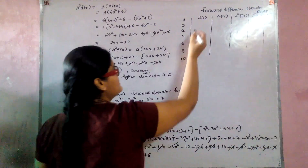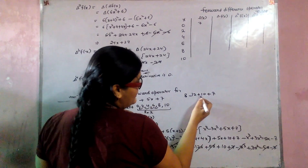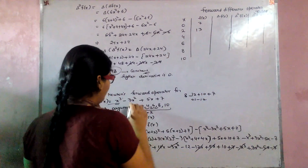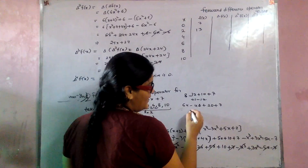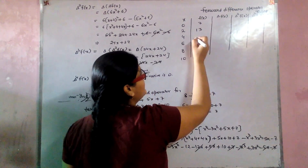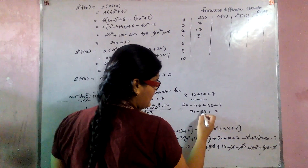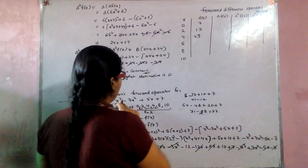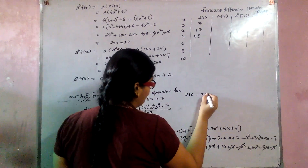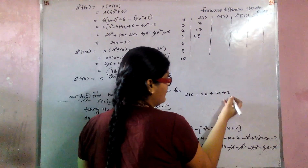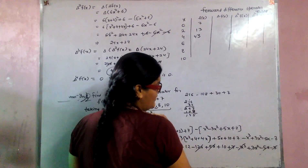Substituting x=0: f(0) = 7. Substituting x=2: 8 - 12 + 10 + 7 = 13. Substituting x=4: 64 - 48 + 20 + 7 = 43. Substituting x=6: 216 - 108 + 30 + 7 = 145. Substituting x=8: 512 - 192 + 40 + 7 = 367. Substituting x=10: 1000 - 300 + 50 + 7 = 757.